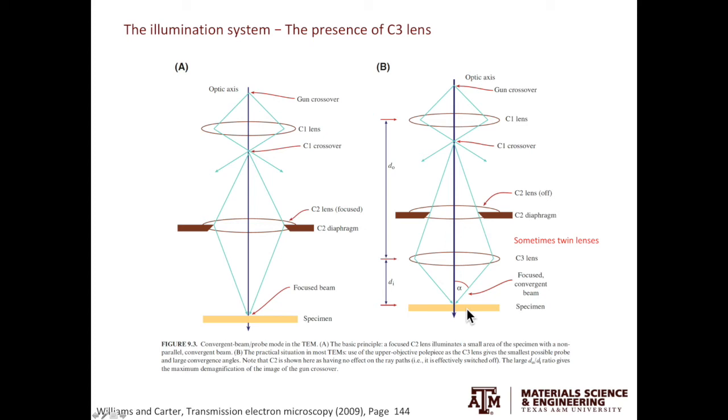The C3 lens does not have to be made from only one lens. It can be made from two lenses, and this is called the twin lens system. Both TechNai TEMs in MIC at Texas A&M University are twin lens systems.